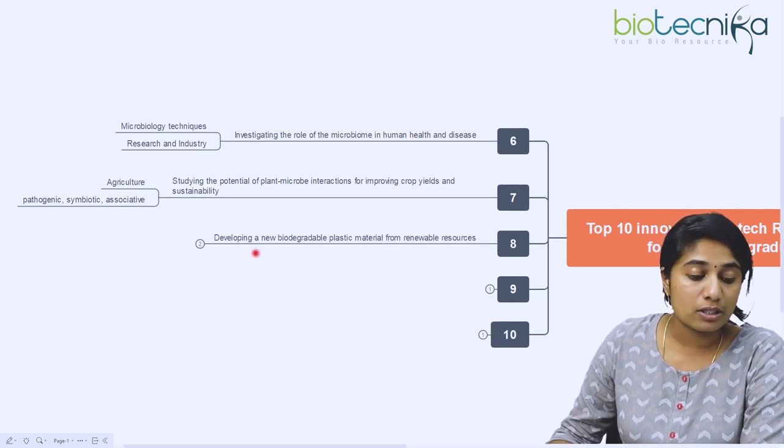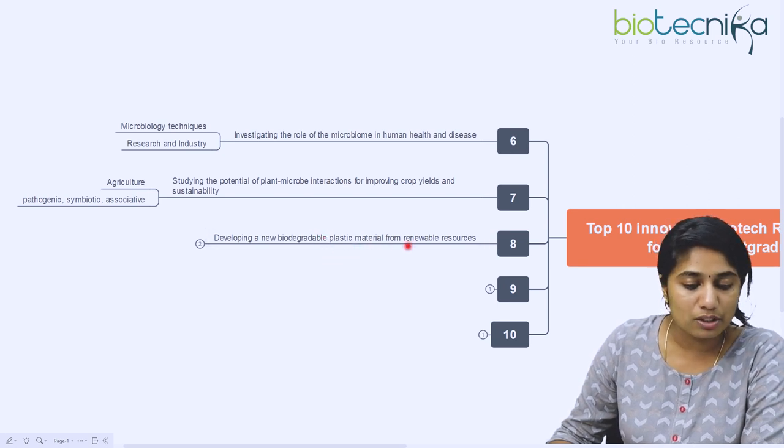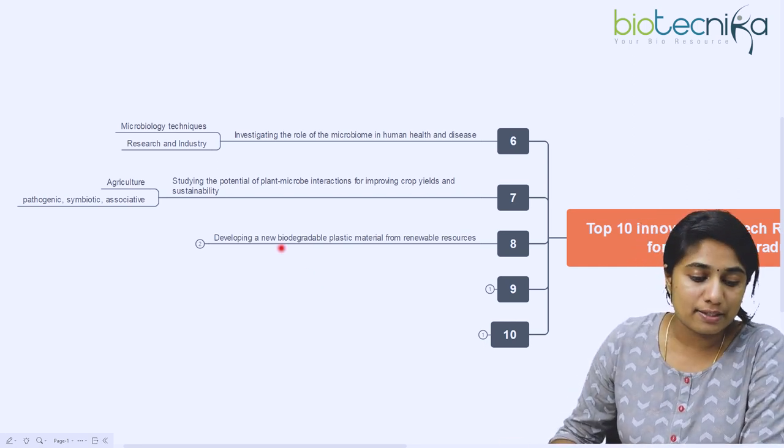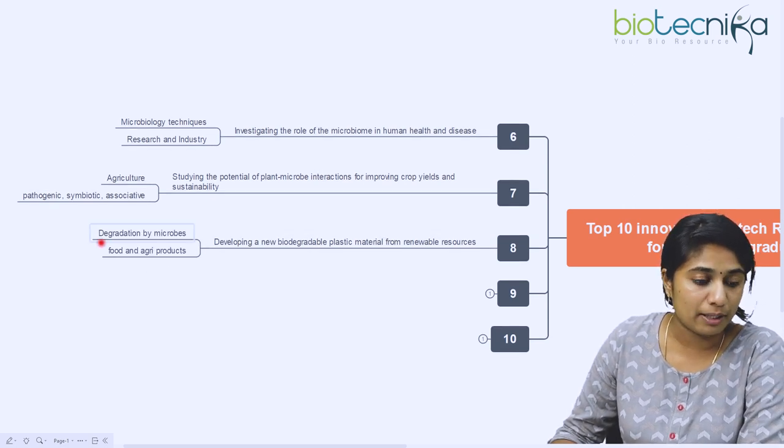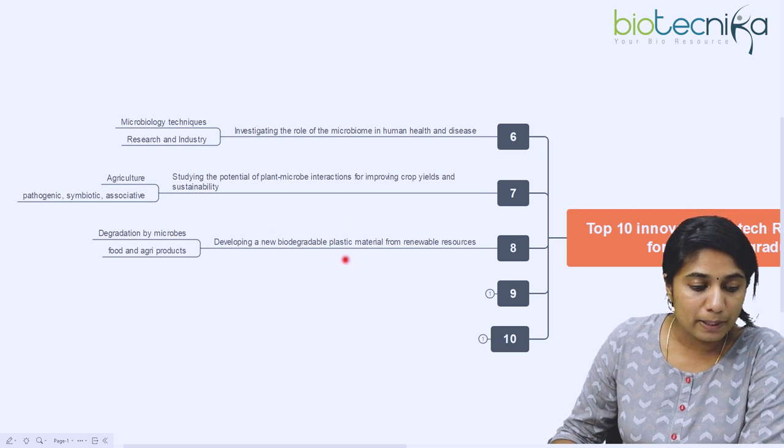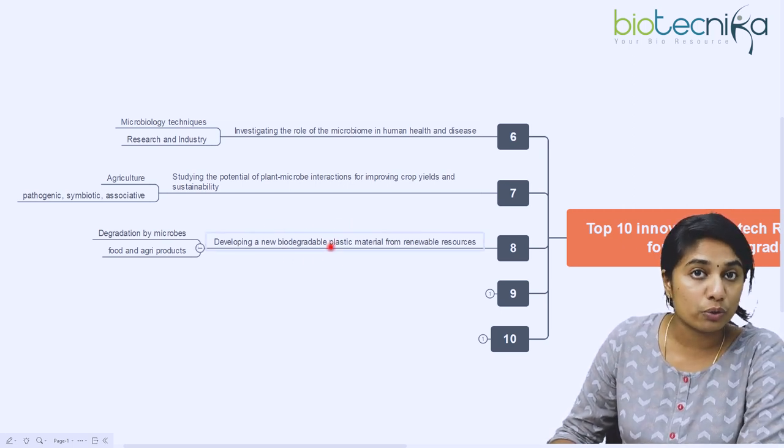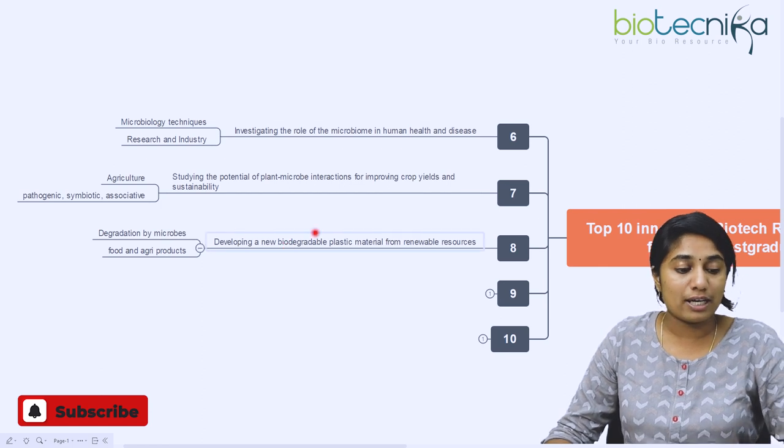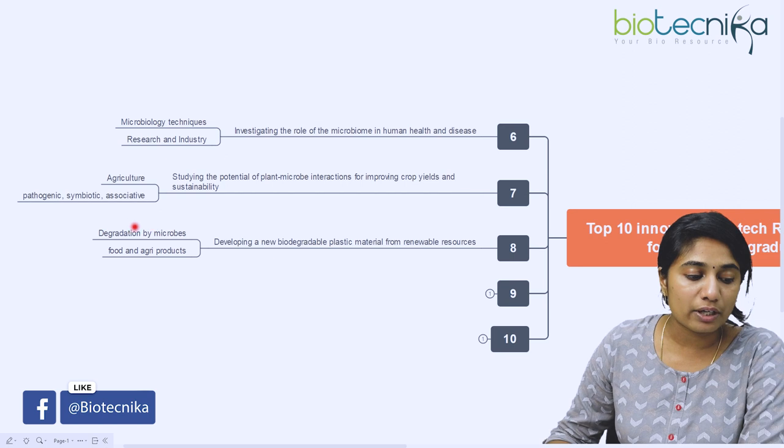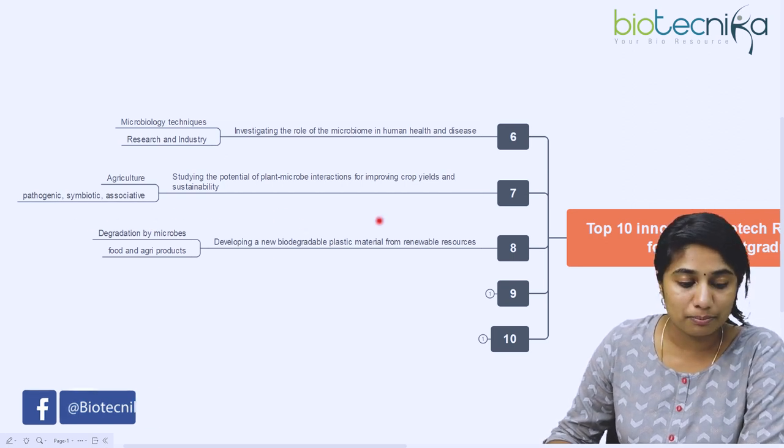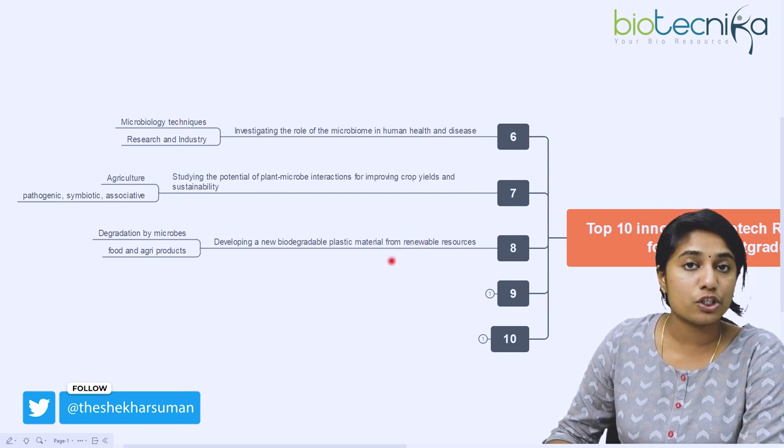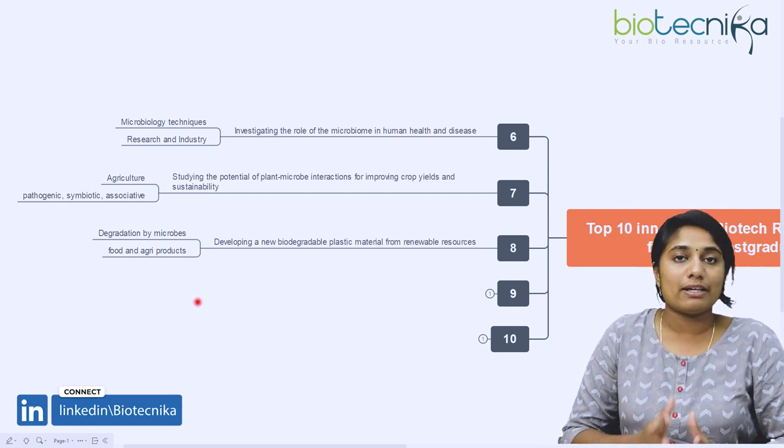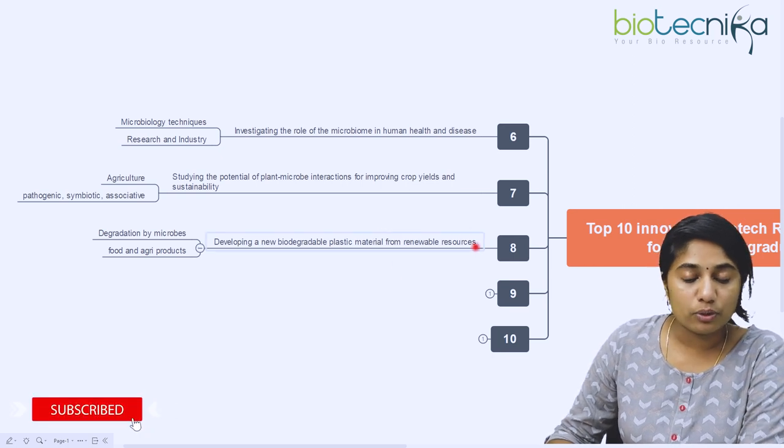The eighth topic is developing a new biodegradable plastic material from renewable resources. If you are environment-oriented and passionate about the environment, you can take up this biodegradable plastic topic. As we all know, plastic doesn't degrade fast - it takes thousands of years for a small plastic to degrade. That is the reason we come up with biodegradable plastic, where microorganisms can degrade the plastic. This plastic can be produced from renewable resources, and one such renewable resource is food and agriculture products. You can be involved in developing such biodegradable plastics from renewable resources.